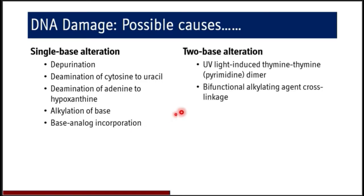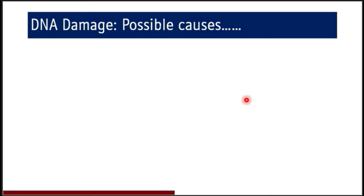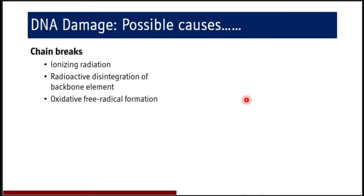UV light-induced thymine-thymine dimers and cytosine-cytosine dimers are also formed — these are pyrimidine dimers formed due to UV light. Bifunctional alkylating agent cross-linkages are also seen and are a possible cause of DNA damage. Next, chain breaks occur due to ionizing radiation, radioactive disintegration of backbone elements, and oxidative free radical formation.